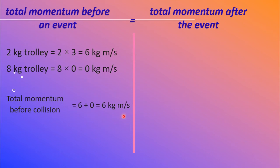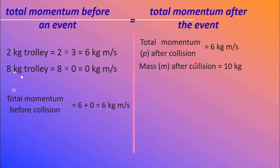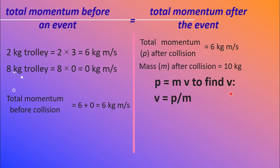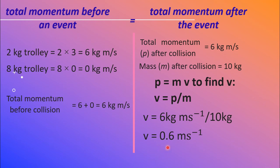Now we find the total momentum after the collision. Both trolleys move as one unit with a mass of 10 kg, and we need to find their velocity. P is 6 kg·m/s and M is 10 kg. By dividing these two — V = P/M — we get the final velocity as 0.6 m/s.